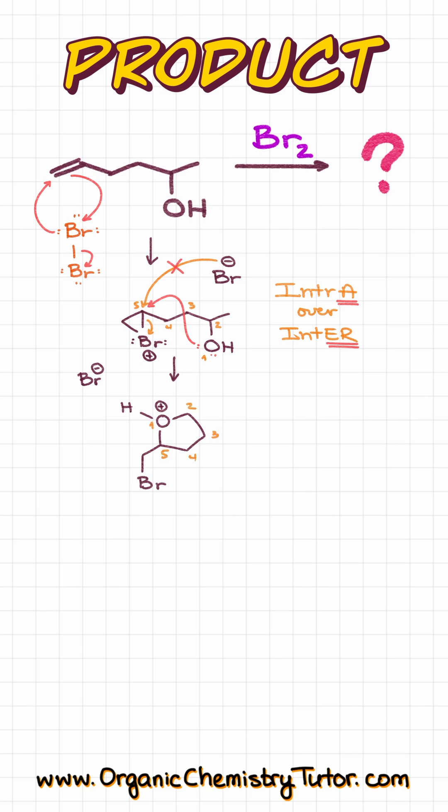And now the Br- is going to come in, pull the proton off, giving us the final product looking like this. So instead of the halogenation reaction, we ended up with an alkoxy halogenation reaction.